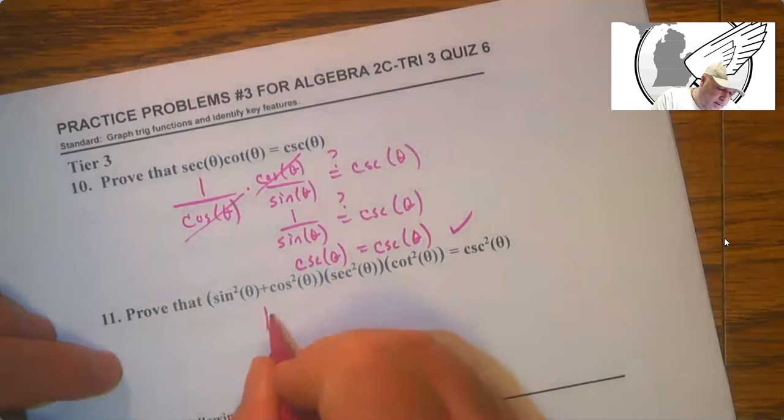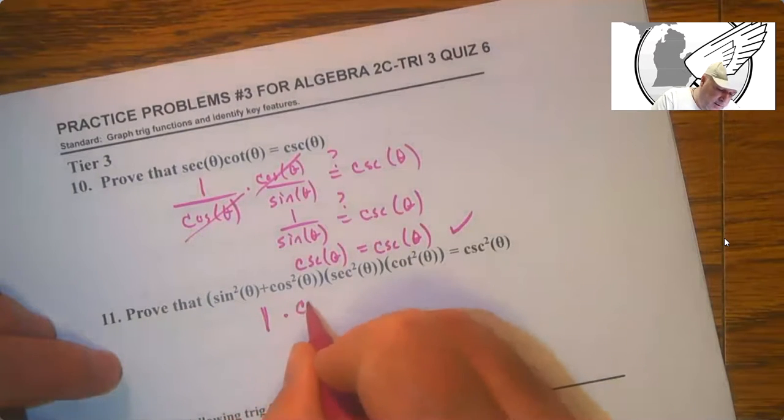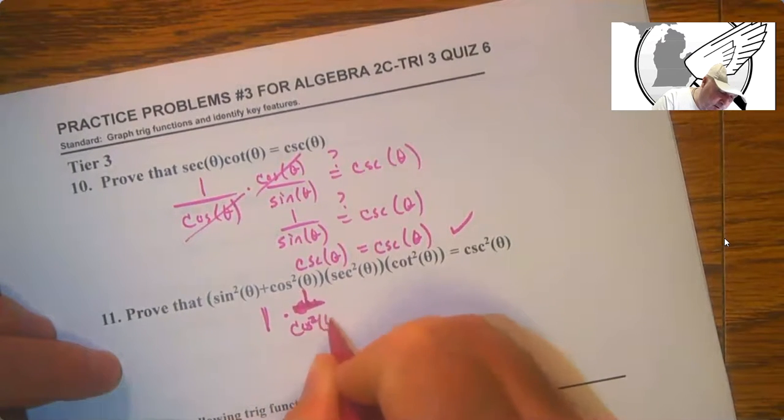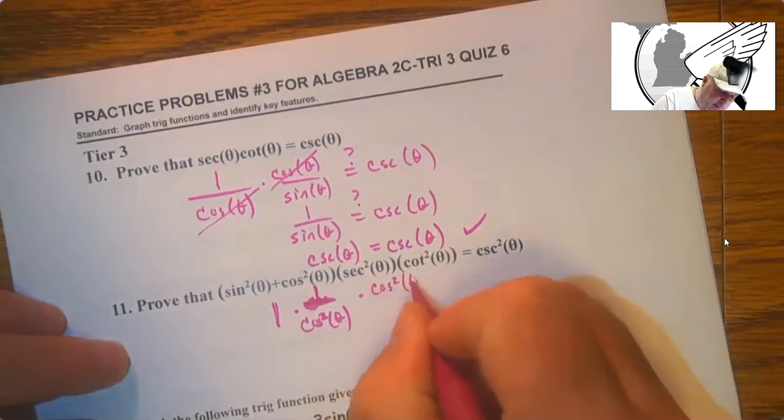So you do have to write it out fully to show that. Here this is 1 again. 1 over sine times cosine times 1 over cosine squared. Times cosine squared. Turn everything into sine and cosine.